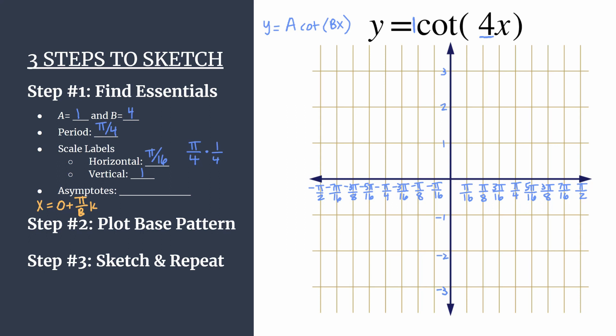For our equation, our asymptote generating equation will be x equals zero plus pi over 4, k. And I like to go ahead and substitute a few values for k here just mentally so I know where to expect my asymptotes on the graph. So if k is zero, of course your first asymptote is there at x equals zero on the y-axis. When k is 1, it's pi over 4. When k is 2, there's one at pi over 2. k negative 1 or negative 2, you have negative pi over 4, negative pi over 2. And that's just a nice way to double check the accuracy of your graph. With that piece in place, I think we're ready to go on to step 2 where we plot the base pattern.